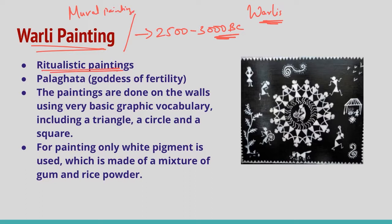Warli paintings are ritualistic paintings and they have a central motif of a chaukat or chauk, which is surrounded by scenes portraying fishing, hunting, farming, dances, animals, trees, and festivals. Among the goddesses, Palagatta, the goddess of fertility, is drawn, and among the male gods, the spirits that have taken human form are represented.